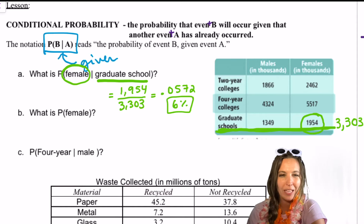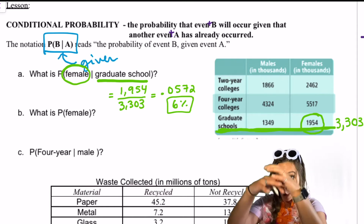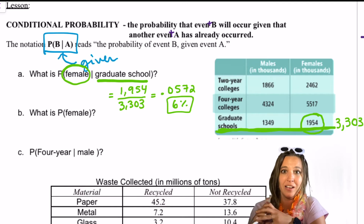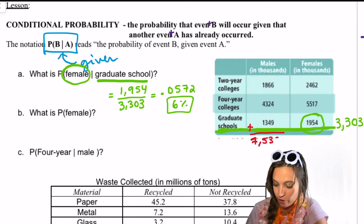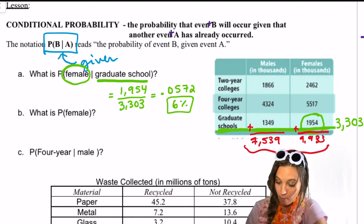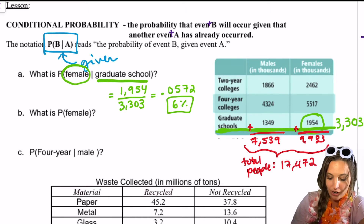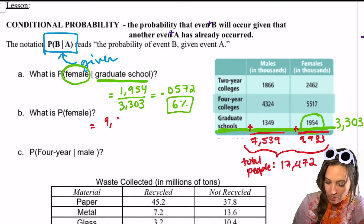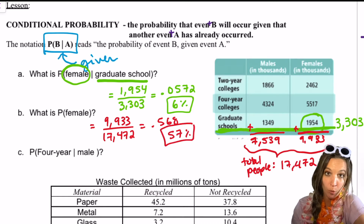Let's take a look at the next one: the probability that we just choose a female out of this set of data. That's not really a conditional probability, but we still need to figure out our total. The total amount of people that responded to the survey, both male and female, gives us all possible outcomes. Total for males is 7,539, total for females is 9,933, and total for all people is 17,472. So 9,933 divided by 17,472 comes out to about 0.568, which is about 57%. We have one more given coming up next.